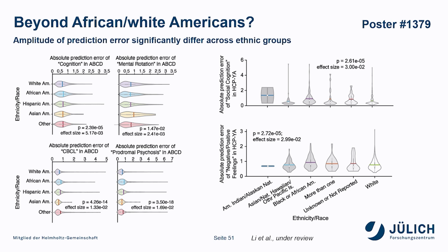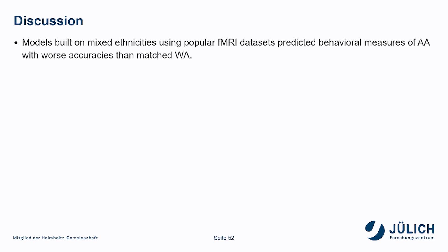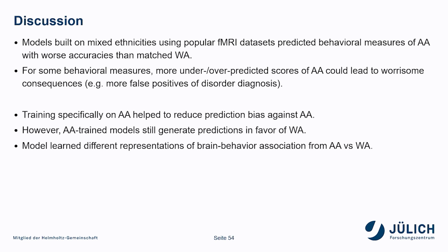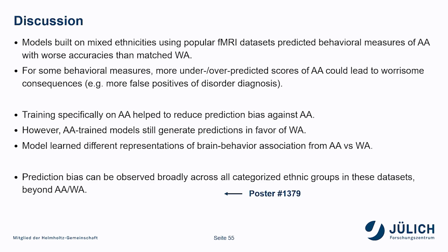For more details, you can come to our poster this year, number 1379. In summary, we observed worse behavior prediction accuracy in African Americans than white Americans generated by machine learning models using two large-scale datasets. Looking into the direction of the prediction errors, problematic consequences against the interests of African Americans could be drawn if the prediction was adopted uncritically. By altering the training sample population, we observed some population-specific effect on the prediction bias; however, it could not fully address the problem. The prediction bias was not only between white Americans and African Americans, but broadly existing across groups.